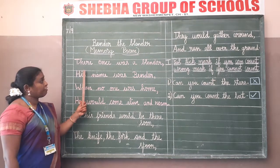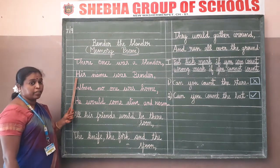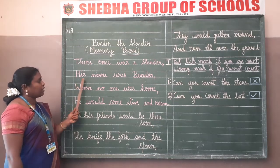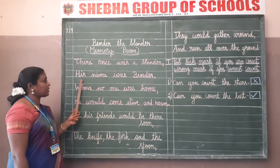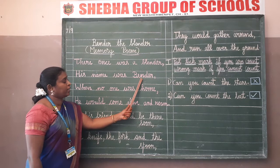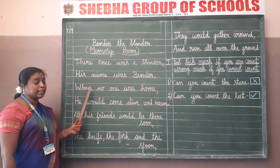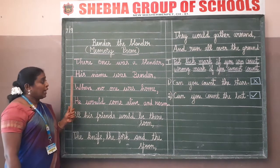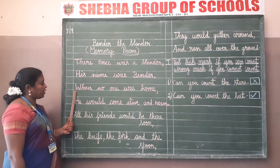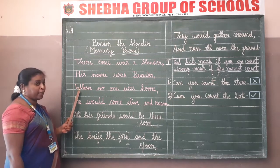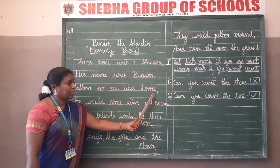Now you are going to write the next line. Leave the next line and start writing from the next line with a capital letter: 'His name was Bender'. Again put a comma. Now we are going to write the third line. Leave this line and start writing from the next line. It is also written with a capital letter: 'When no one was home', comma.